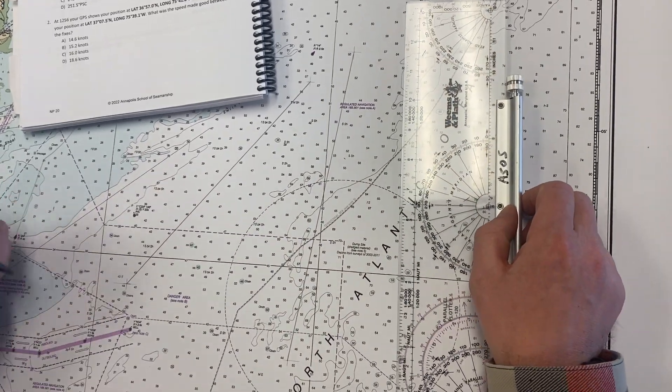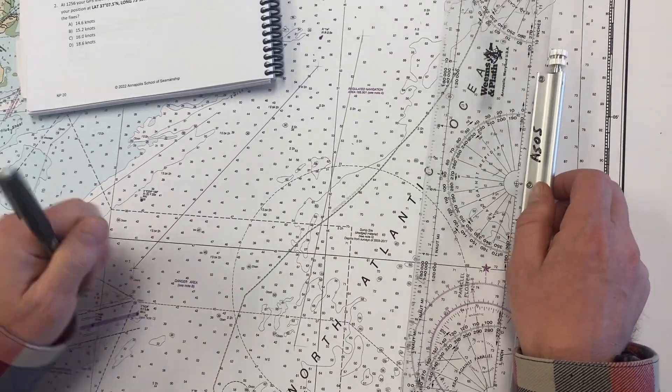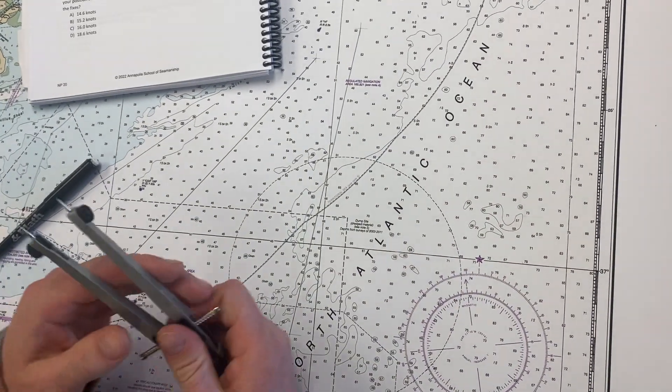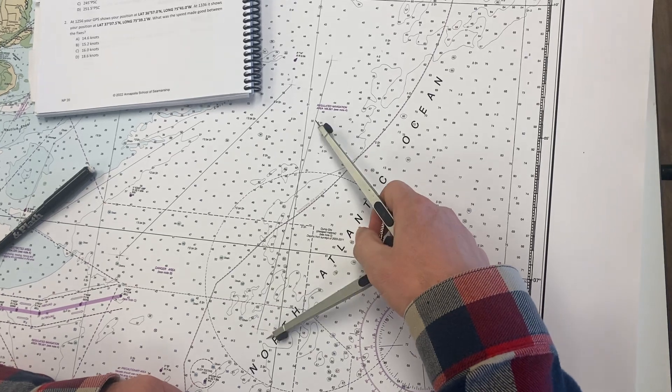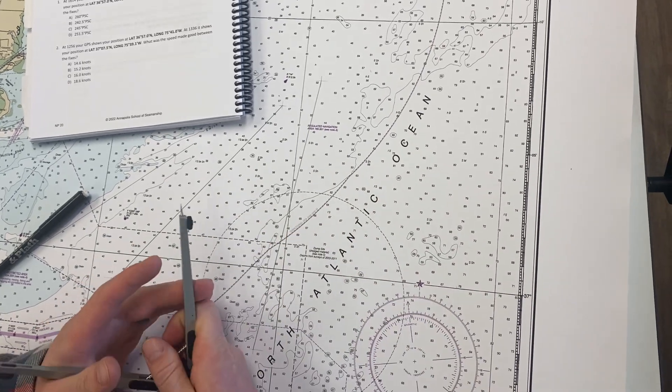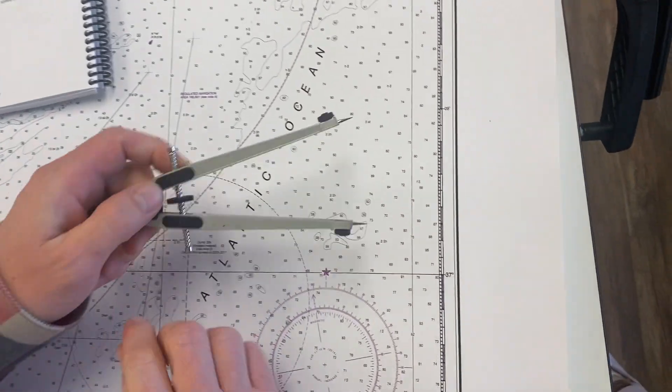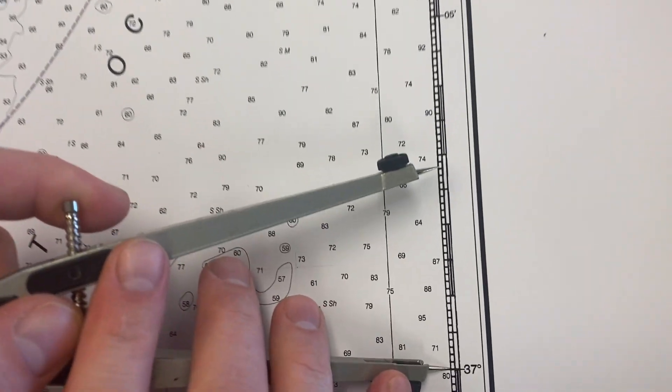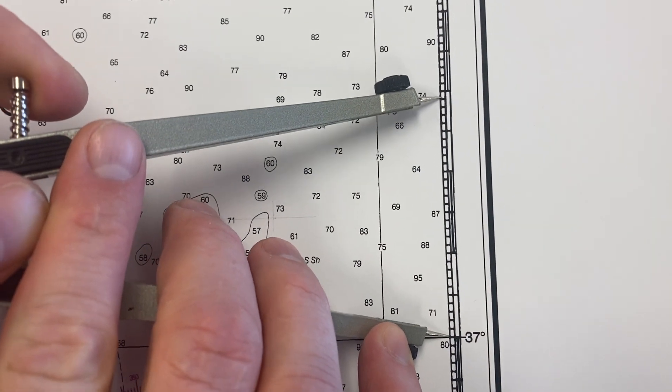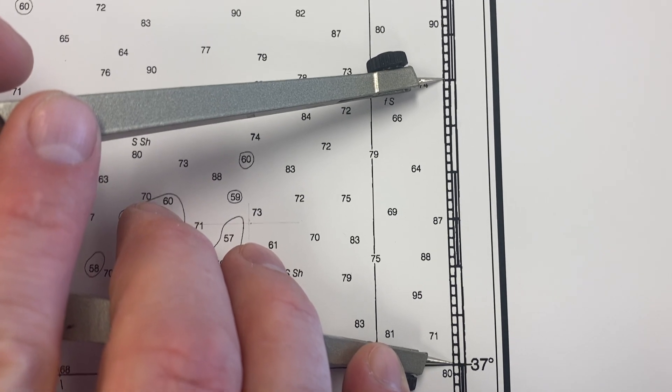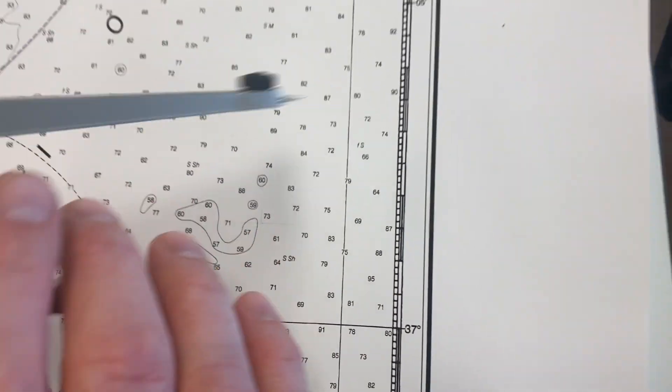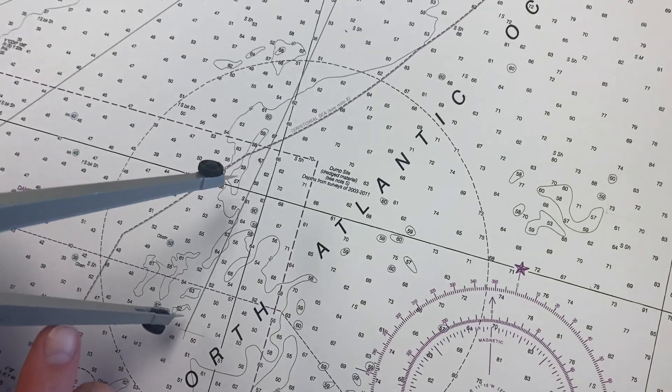I'm going to need to measure the distance between these. Now it's too big of a distance here to sweep with dividers all the way out. So I like to pick a predetermined amount. I'm going to go right off the latitude scale here and just take three nautical miles. So one, two, three, right there.